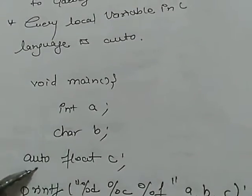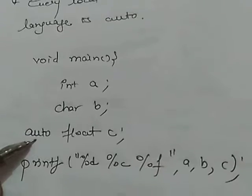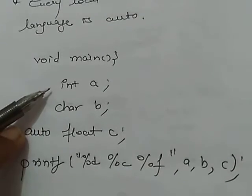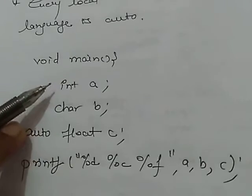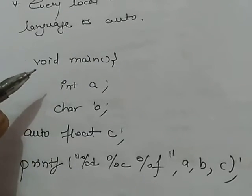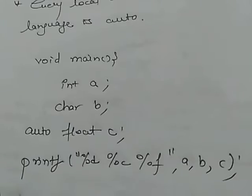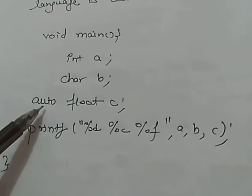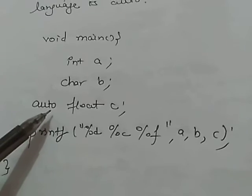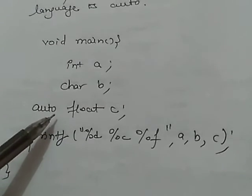So, you can write this, you can explicitly mention this or it is implicitly defined by the compiler. So, this is the automatic storage class. One thing you must remember here, the memory assigned to automatic variable gets freed upon existing from the block.